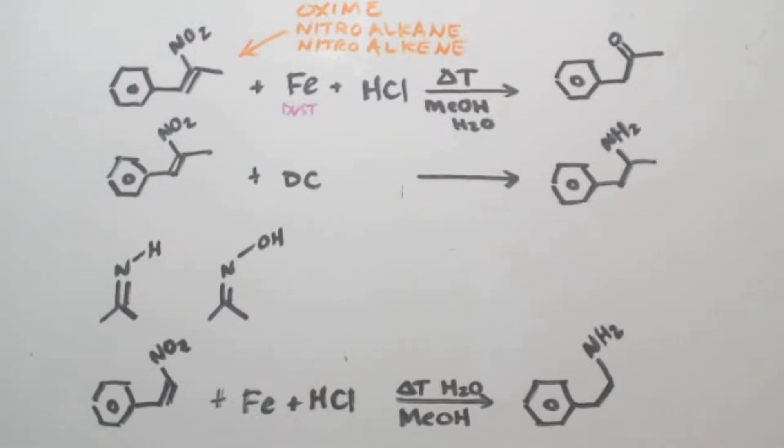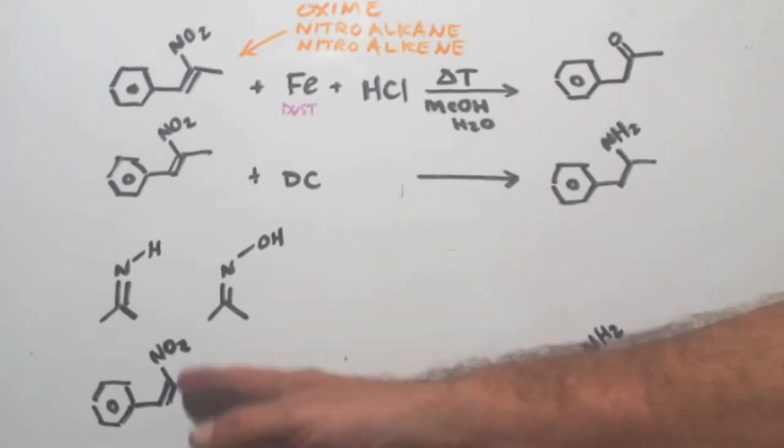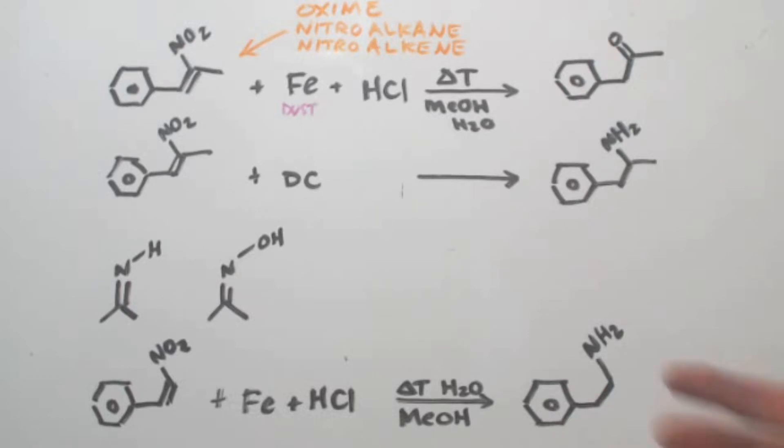Now if you do the same reaction, you'll end up with an amine and a single bond. So you reduce it both ways, the nitro group and the double bond. So if you want to make an amine that's a primary amine, here you go. Here's a good way to do it. If you can get a double bond next to a nitro group, you can easily reduce it to an amine.